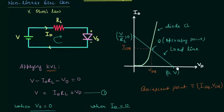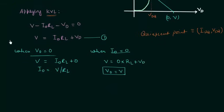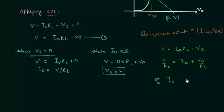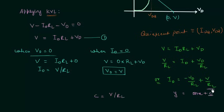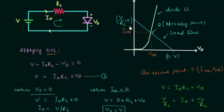Now we will find the slope of the load line. From equation 1, V equals ID·RL plus VD. Dividing both sides by RL gives V/RL equals ID plus VD/RL, or rearranging: ID equals minus VD/RL plus V/RL. Comparing this with Y equals MX plus C, the intercept C is V/RL and the slope M is minus 1/RL. The slope is negative, which is consistent with the negative slope visible in the load line plot.